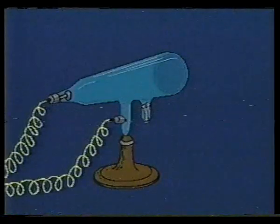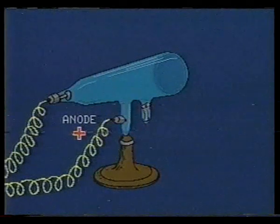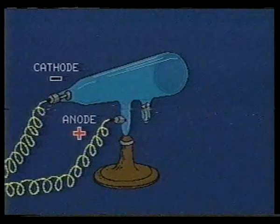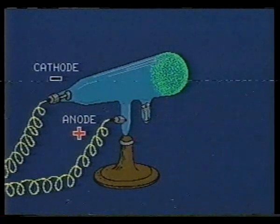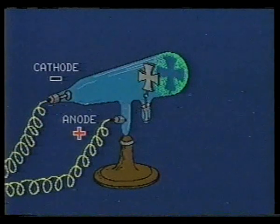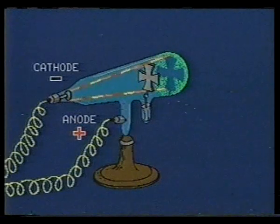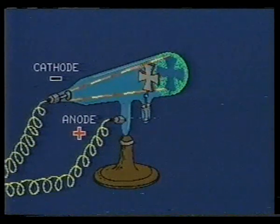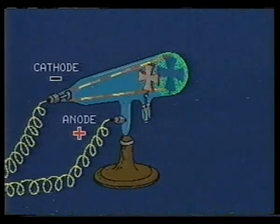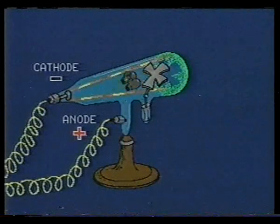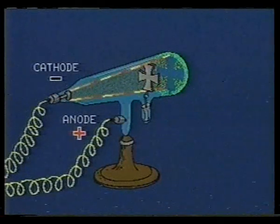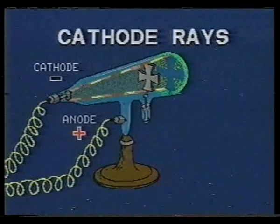William Crookes designed more complex vacuum tubes and showed that whatever caused the glow seemed to stream from the cathode, or negative terminal. By interrupting this stream from the cathode, he showed that it traveled in straight lines. The stream also caused an increase in temperature of objects in its path and produced a mechanical force — a push. Crookes guessed that these so-called cathode rays were, in fact, a stream of particles.